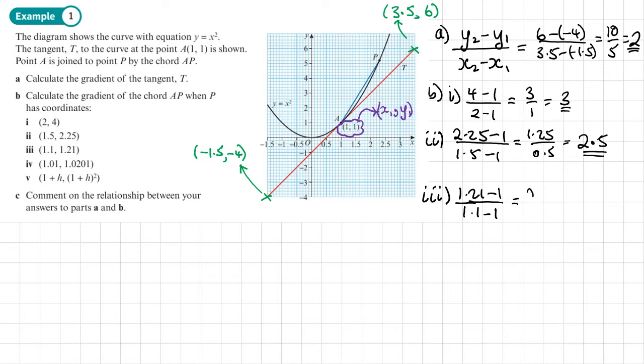So I have 1.21 minus 1 over 1.1 minus 1. That gives us 0.21 over 0.1, and that gives us a value of 2.1 for the gradient. Can you see each time it's getting smaller and it seems to be getting closer to 2?